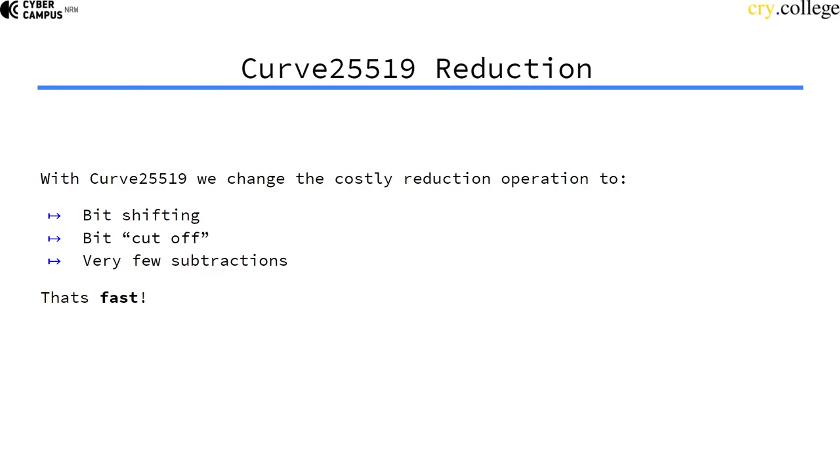if we implement it right, they aren't even operations. You just move registers around and that's it. So that's one of the reasons why Curve25519 is so fast. It's actually the major reason why it's so fast.